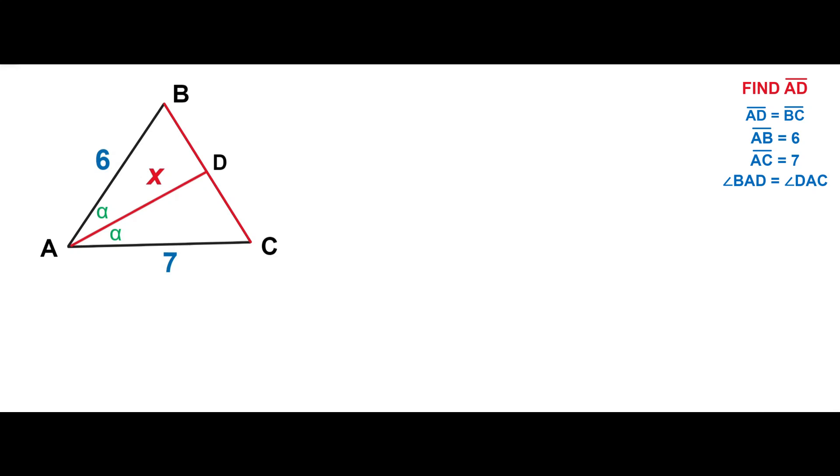Welcome to Geometry Masterclass. In this video we have a triangle ABC where the angle bisector AD and opposite side BC are congruent. The length of the two adjacent sides AB and AC are 6 and 7 respectively. The task is to find the length of the angle bisector AD.